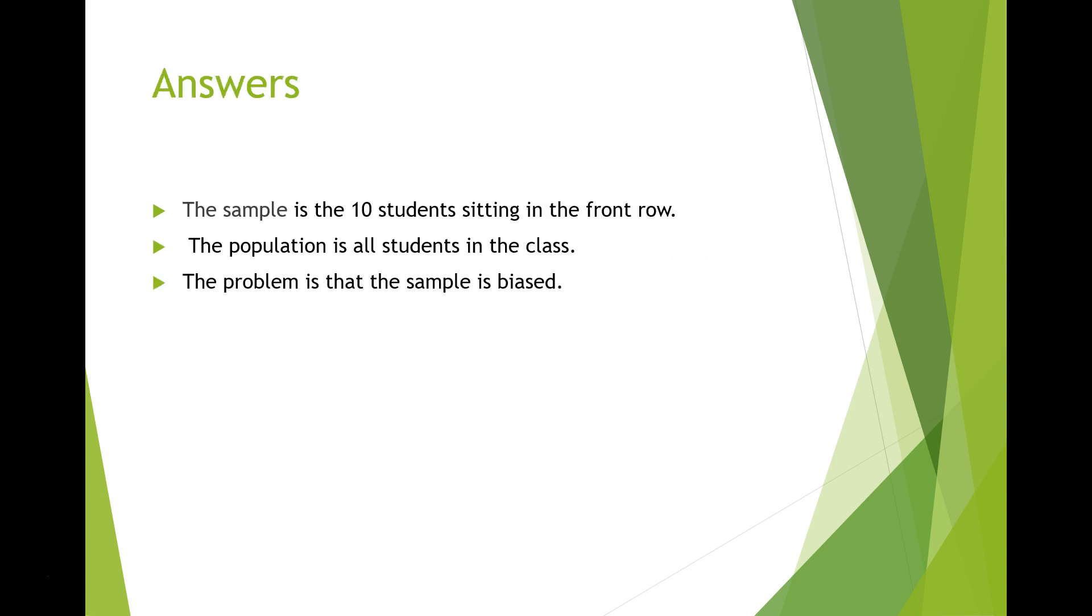The sample is the 10 students sitting in the front row. The population is all the students in the class. The problem with choosing this sample is that it's biased. Those who sit in the front row of classes tend to be more interested in the class and tend to perform higher than the students who sit in other places in the classroom.